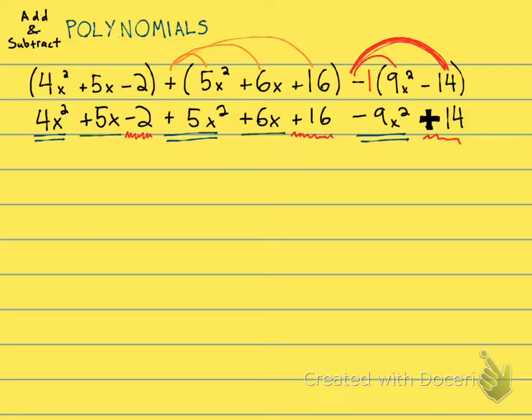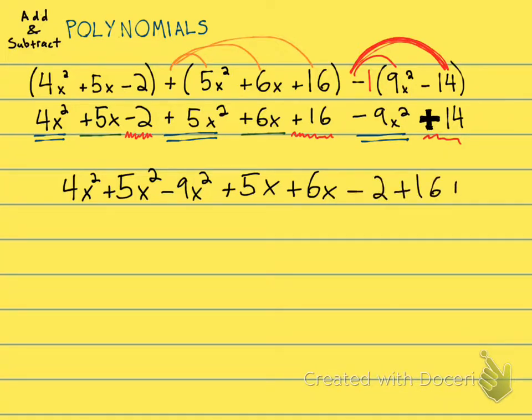And now it's just time to put those together. So let's do the x² first. I'll go ahead and rearrange them. I have 4x² plus 5x² minus 9x². Then I have plus 5x plus 6x.